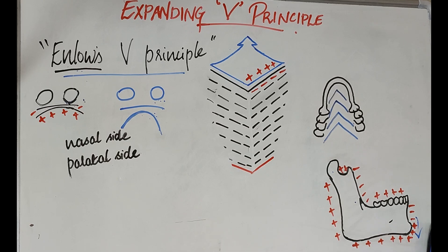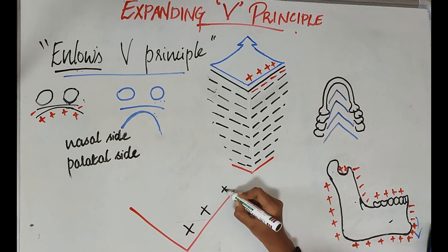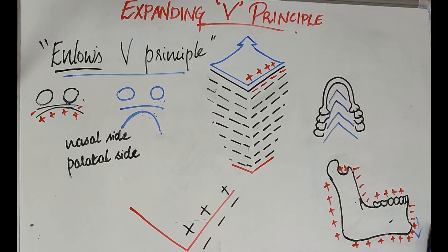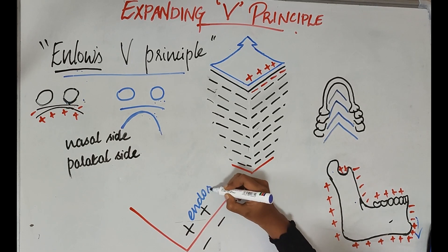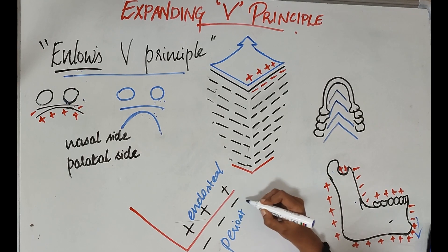First, seeing about Enlow's V principle: most of the bones in the cranial and facial region — the craniofacial bones — mostly follow a V-shape configuration. According to Enlow, there will be bone deposition on the inner aspect of the V and bone resorption on the outer aspect. The inner surface of the bone is called the endosteal surface and the outer surface is called the periosteal surface.